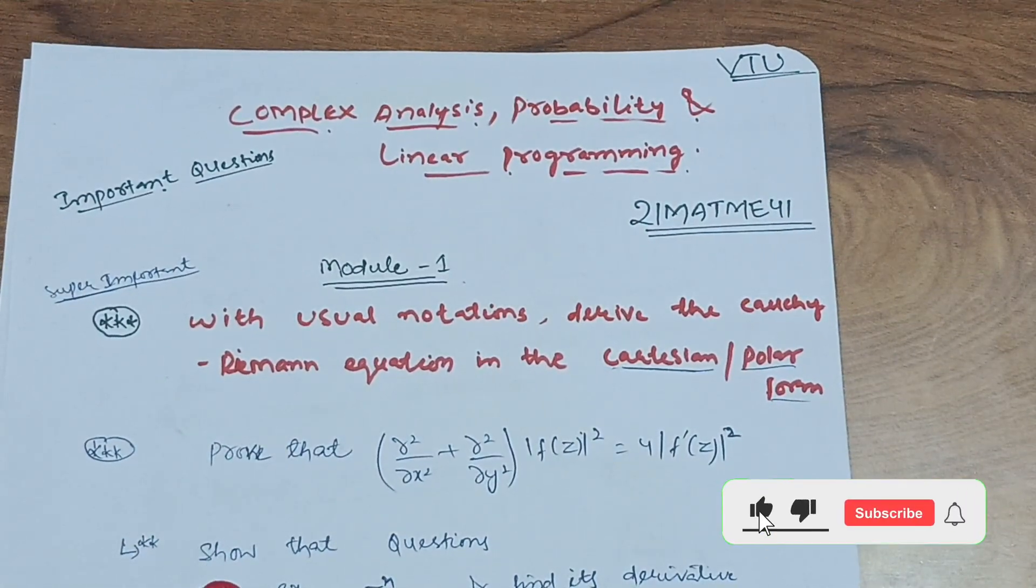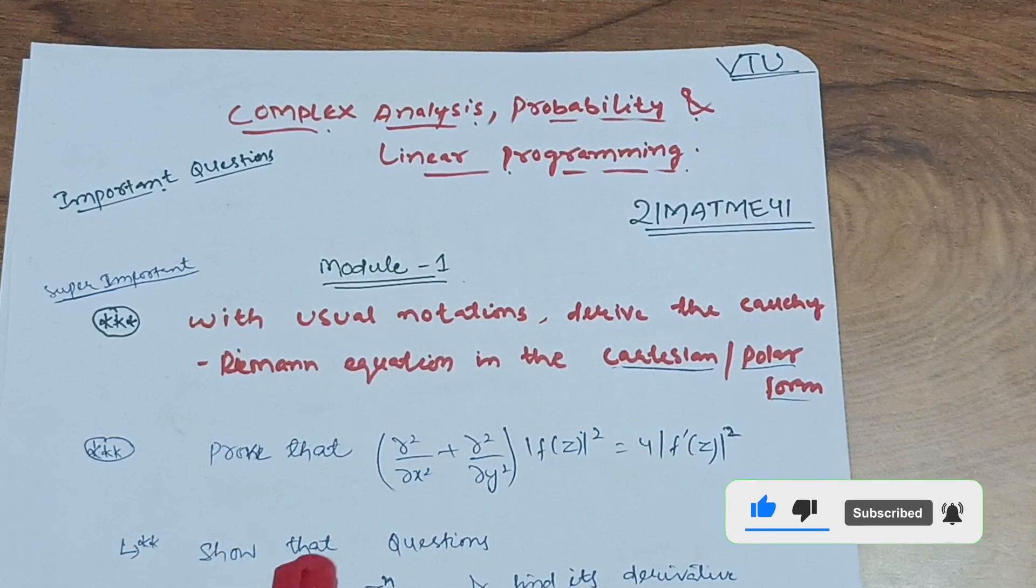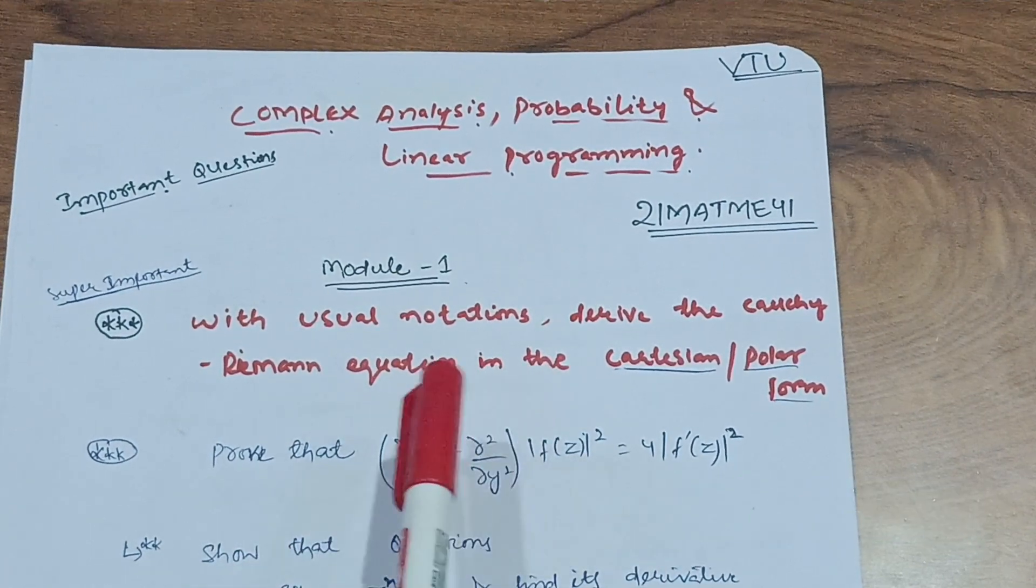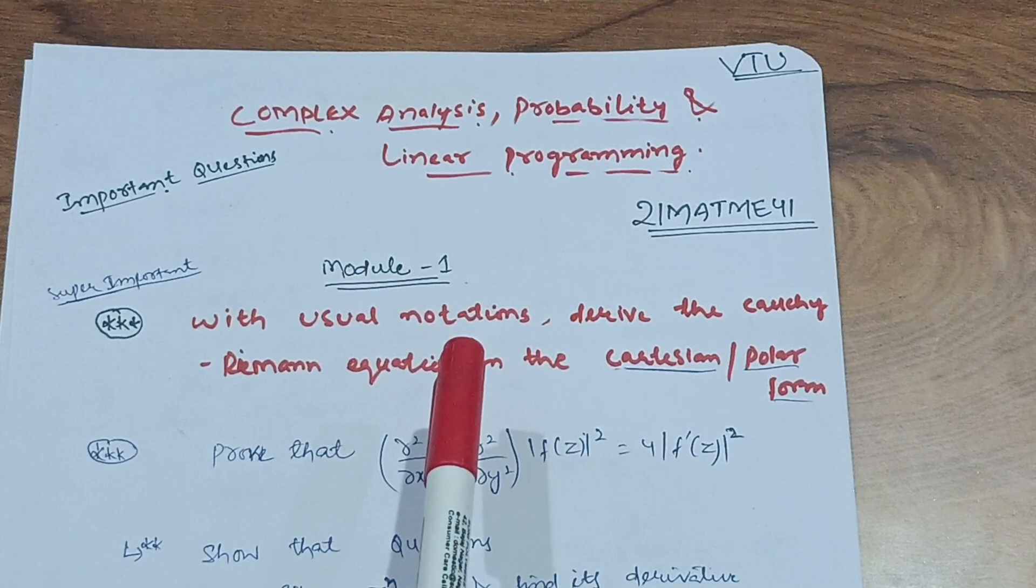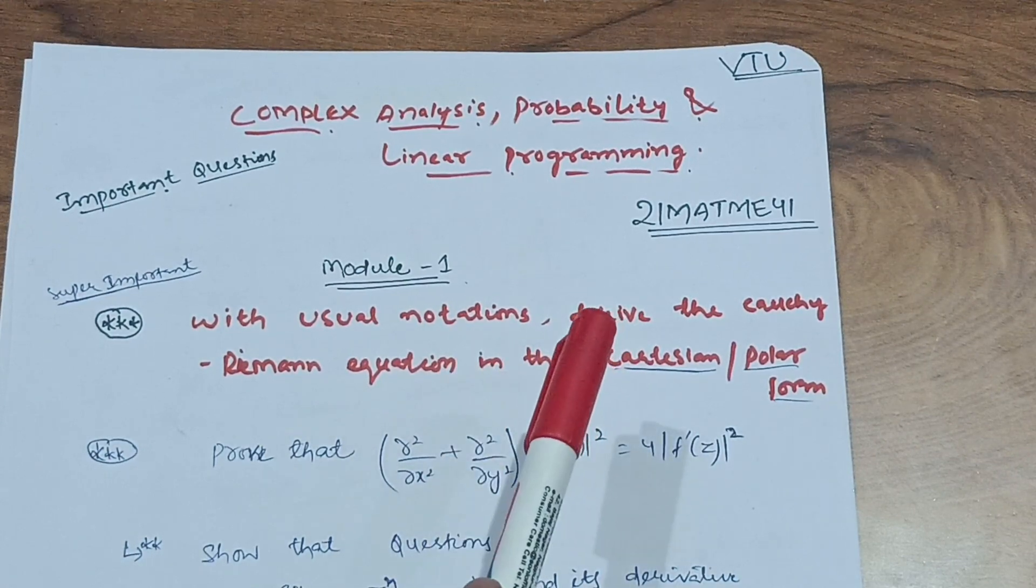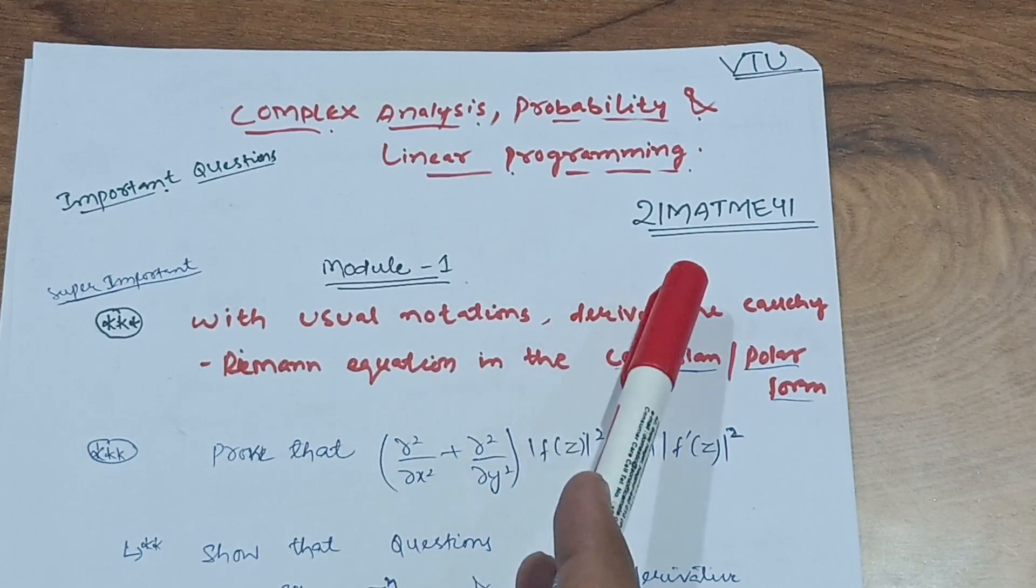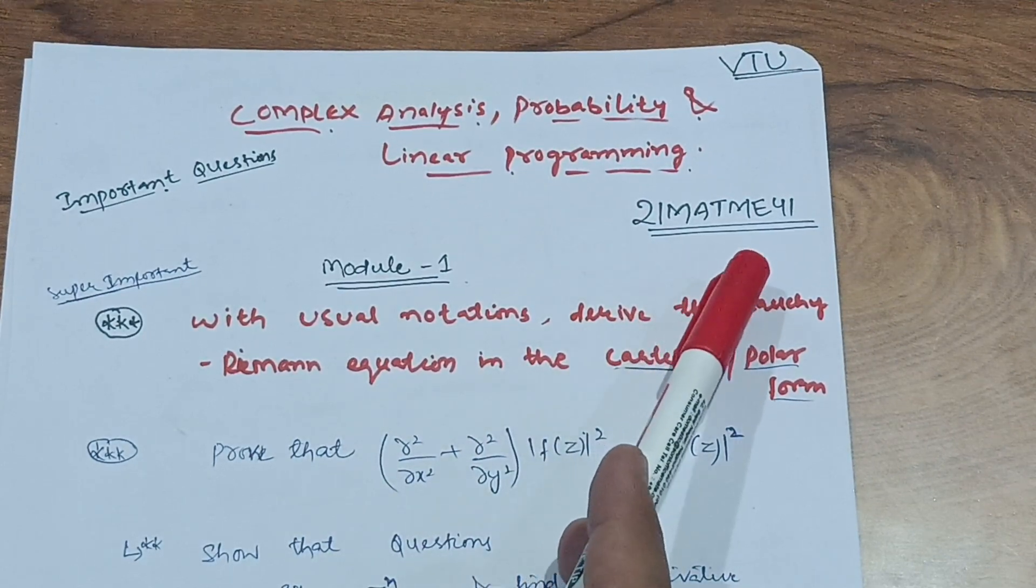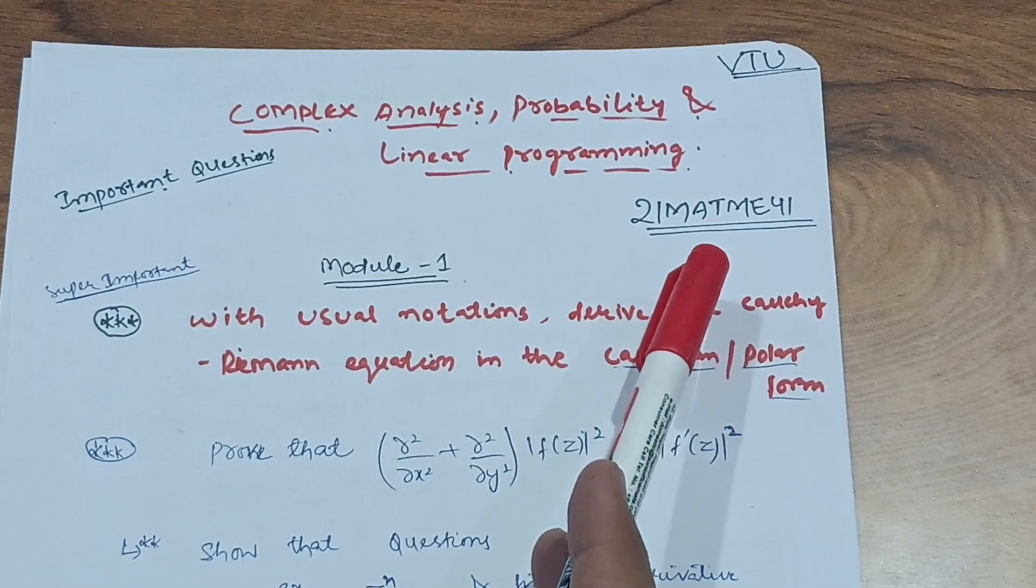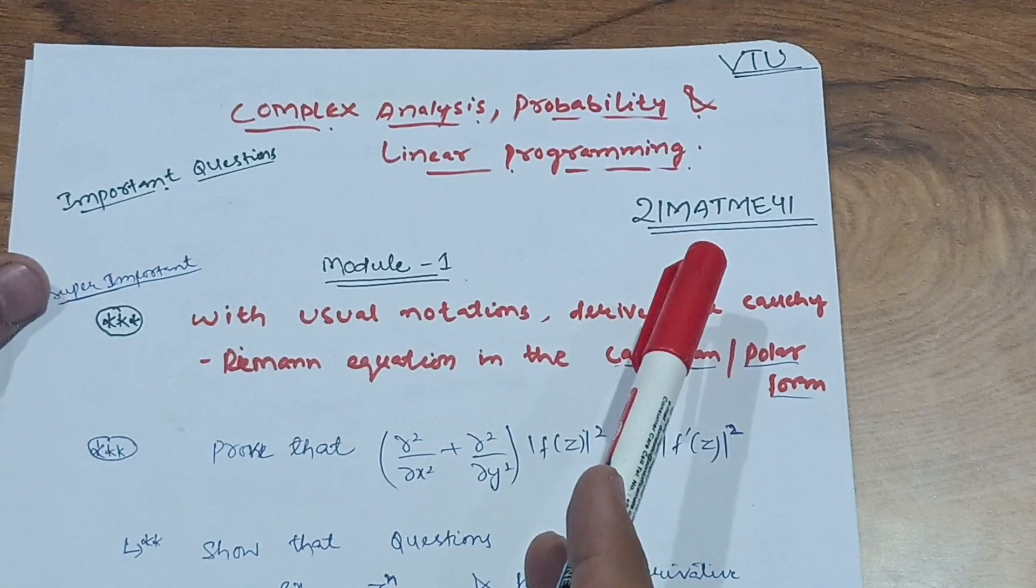Hello friends, welcome back again to my channel. In this video, I want to tell you some important questions regarding complex analysis, probability, and linear programming. It is the mathematics subject M4 for fourth semester students, subject code 21MATME41, especially for mechanical engineering students.